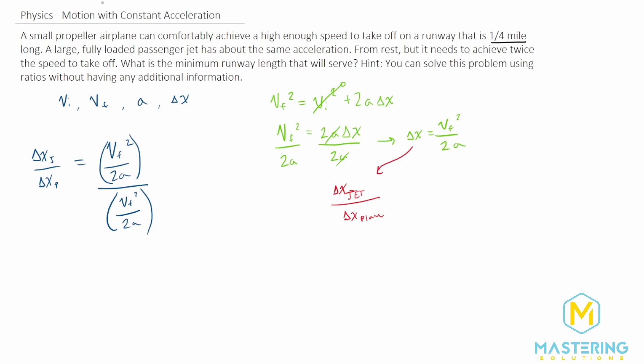Now we can simplify it a little bit because the acceleration they tell us is the exact same for both of the planes. So that will go away. And now we're simply left with the final velocity for the jet squared divided by the final velocity squared for the plane.